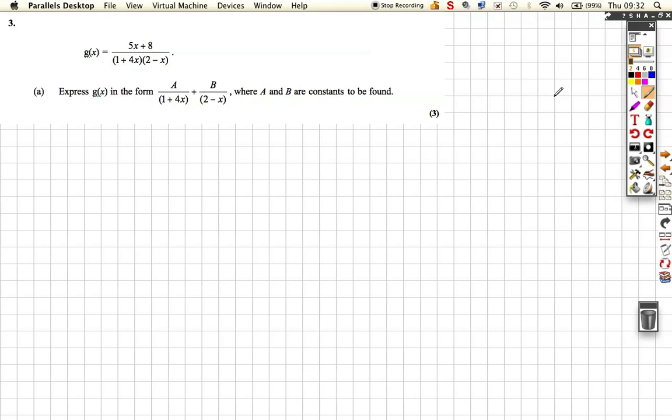Okay, so third question in some mixed C4 integration questions. Here we're given a fraction, an algebraic fraction, and we're asked to express it in partial fractions form in this form here, where a and b are constants to be found. So, let's just go ahead and do it. 5x plus 8, all over (1 plus 4x)(2 minus x), is equal to A over (1 plus 4x) plus B over (2 minus x).